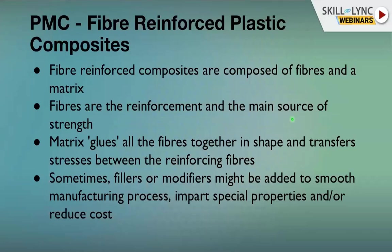Fiber reinforced composites are composed of fibers and matrix. Fibers are the reinforcement and the main source of strength — they carry the load. The matrix glues all fibers together and transfers stress between reinforcing fibers, binds them, and protects them from environmental damage.